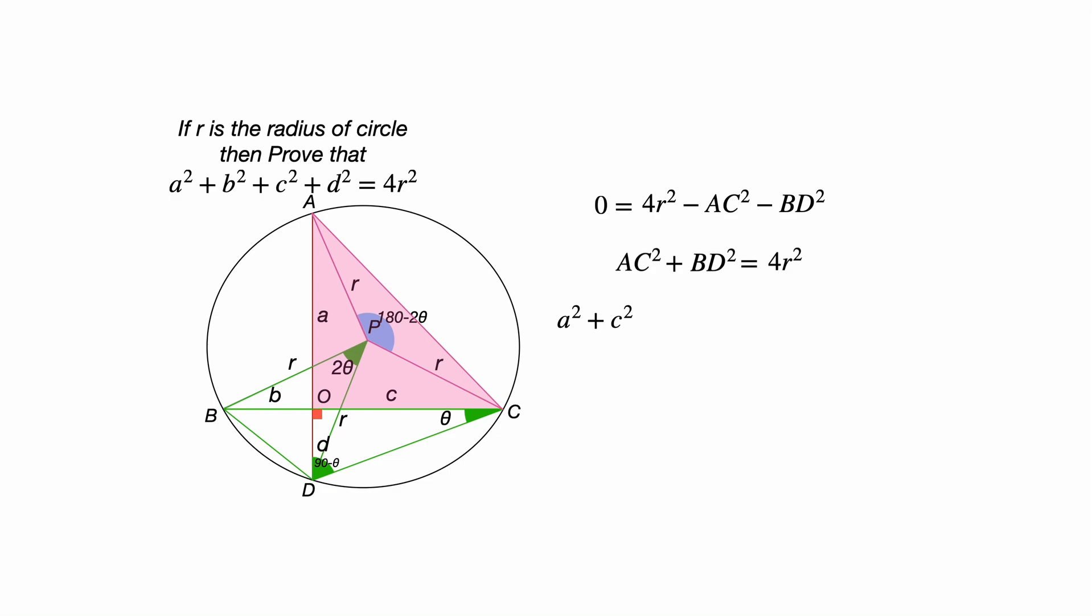Similarly, if we consider the triangle BOD, here BO is b, DO is d. So, BD can be written with the help of Pythagoras theorem. BD² will be equal to b² + d². That is getting you equal to 4r².